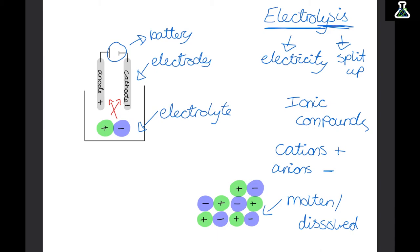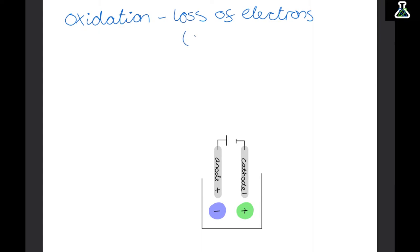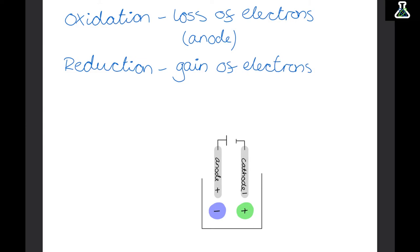During electrolysis, ions turn into atoms by either gaining or losing electrons. Oxidation is the loss of electrons and happens at the anode, as negative ions need to lose electrons to become neutral atoms. Reduction is the gain of electrons and happens at the cathode, as positive ions need to gain electrons to become atoms. We can remember this with the mnemonic OIL RIG: Oxidation Is Loss, Reduction Is Gain.